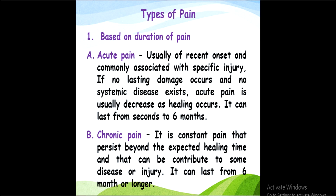The second type is chronic pain. It is constant pain that passes beyond the expected healing time and can be contributed to by some disease or injury. It can last six months or longer. If pain lasts less than six months, it is considered acute; if it goes beyond six months, it is considered chronic pain.